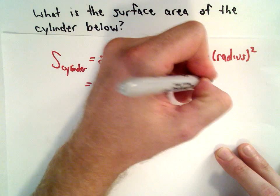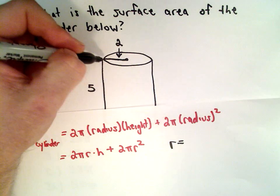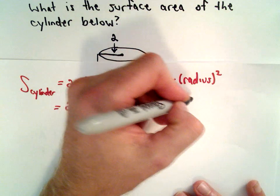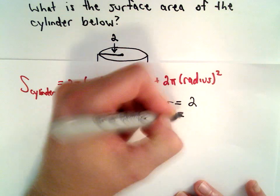So again, we're given that the radius was equal to 2—that's the distance from the center of the cylinder to an edge—and we're given that the height is equal to 5.